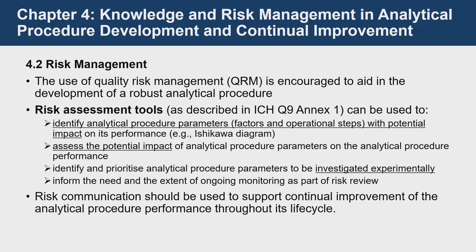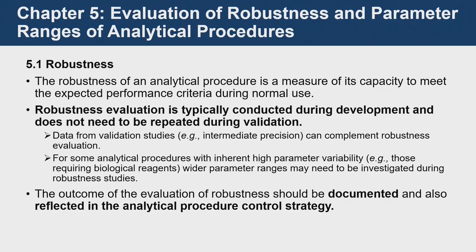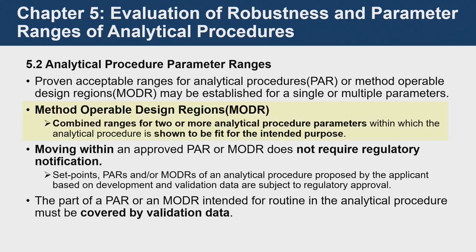About risk management: risk assessment tools mentioned in Q9 can be utilized. An Ishikawa diagram could be utilized to check for potential impact on performances and to identify analytical procedure parameters. Robustness is a measure of capacity to meet the expected performance criteria during normal use. If the robustness evaluation is done, it does not have to be checked as part of the validation study. The outcome of the robustness evaluation should be documented and reflected in the analytical procedure and control strategy.